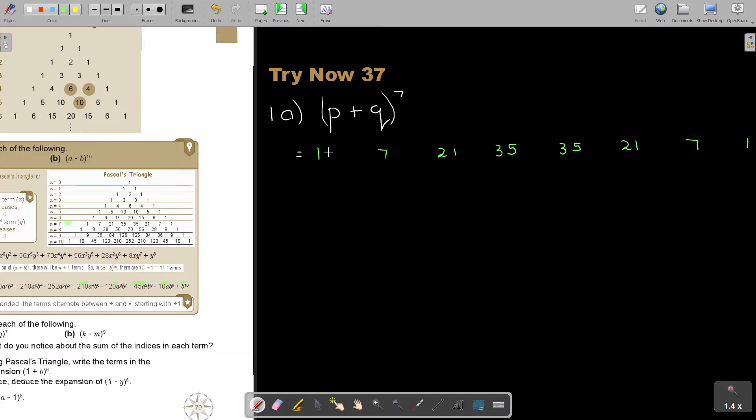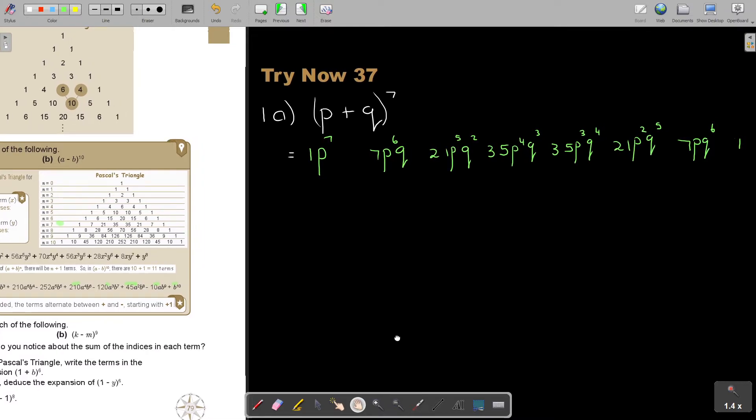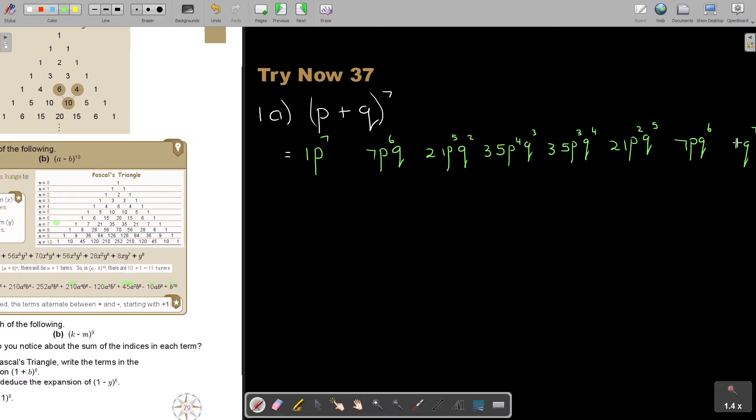So the coefficients are 1, and then it's going to be 7, and 21, 35, 35, 35. After 35, it's again 21, and then 7 and 1. Now, it starts with P. So if I'm looking at this, because it's 7, this is P^7. This is P^6, P^5, P^4, P^3, P^2, P^1. And now, this is having no Q. And then, it's going to have Q to the power of 1. Then, Q^2, Q^3, Q^4, Q^5, Q^6. And then, this will be Q^7.